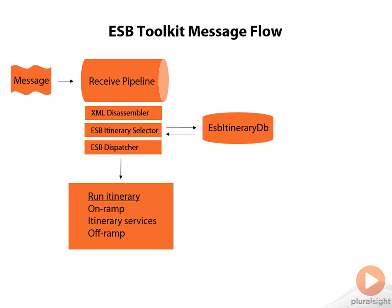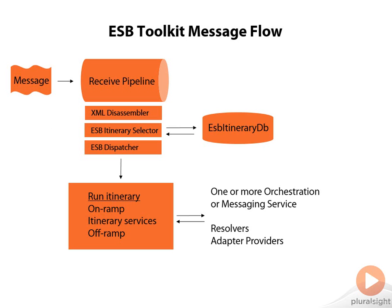The dispatcher will perform the following actions: it will identify the on-ramp, run any itinerary services, and then select an off-ramp. The itinerary services are made up of one or more orchestration or messaging services. These services will use resolvers and adapter providers to complete their tasks. Most ESB solutions use the rules engine to help configure the resolver and adapter providers.